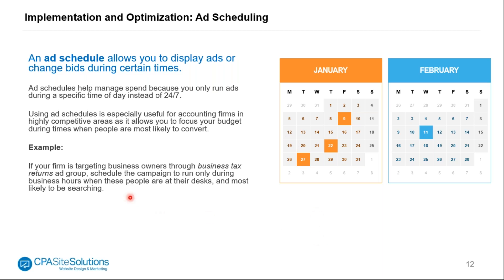For example, if your firm is targeting a business owner through a 'business tax returns' ad group, you can schedule your campaign to only run during business hours when people are actually at their desks and most likely to be searching.